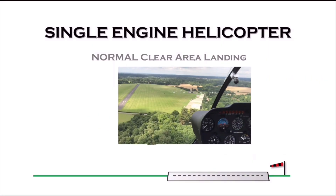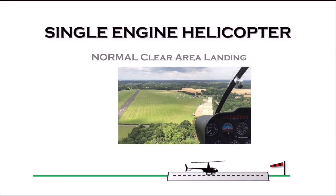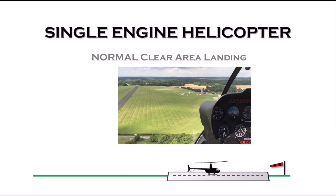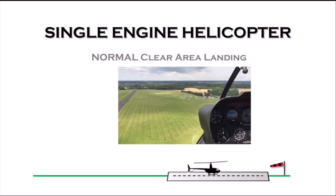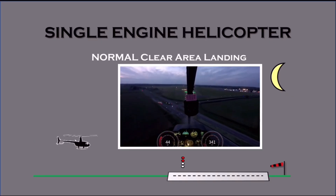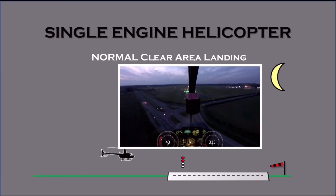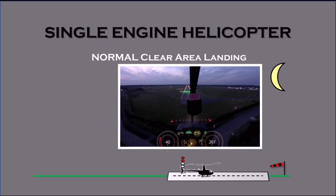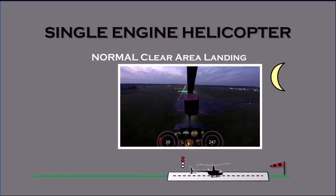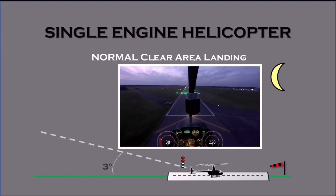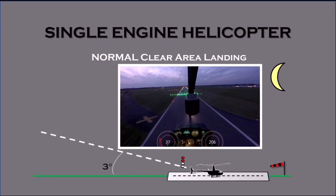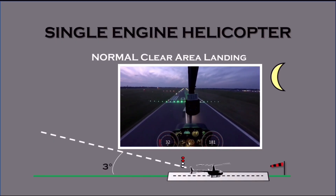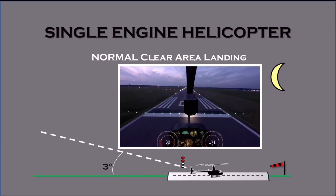The standard helicopter approach angle to a clear area is around 10 to 15 degrees, which is deeper than the equivalent fixed-wing approach of around 3 degrees. You can see this when you fly to a runway that has a visual approach path indicator lighting system — if you fly the correct 3-degree glide path, you will be flying a far shallower approach than normal. This approach lighting system can be very helpful when landing at night, when judging distance and depth perception is more challenging.